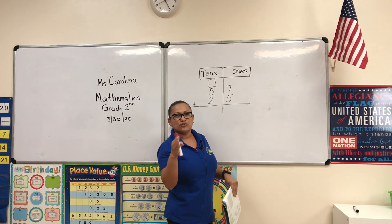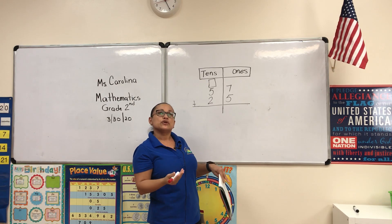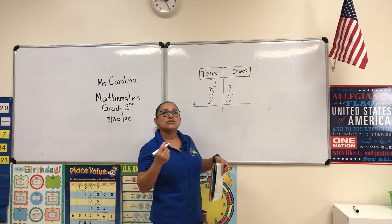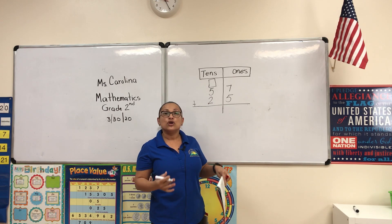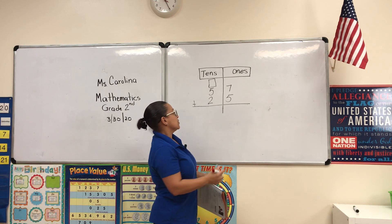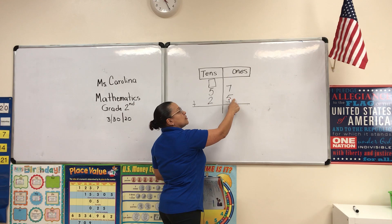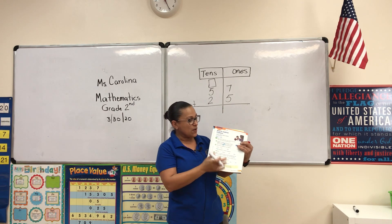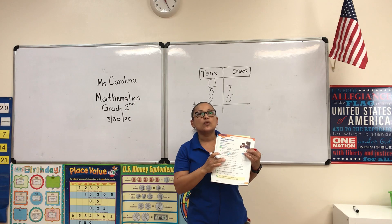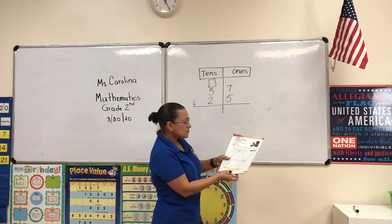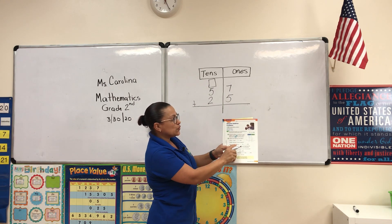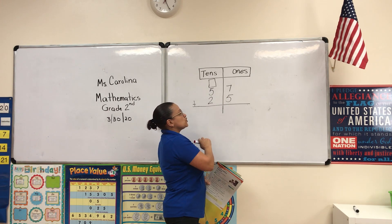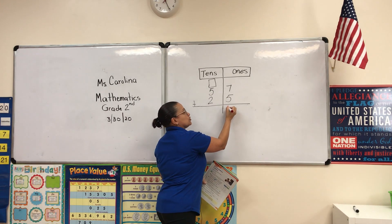I'm going to use different colors so you can see what we do when we regroup. Always remember: you add your ones first. So you're going to add 7 plus 5, which equals 12. That means you have 12 ones on that first line.